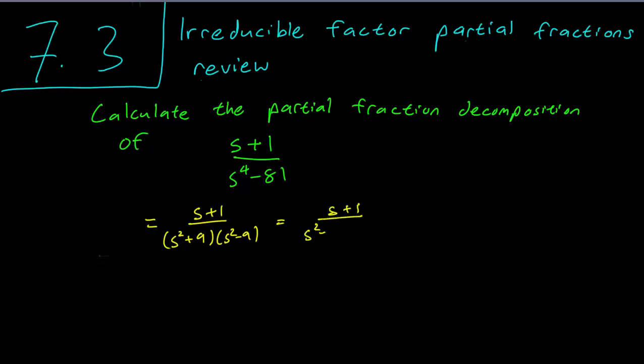So we have s plus 1, s squared plus 9, s plus 3, times s minus 3. And the s squared plus 9 term has no zeros, so it cannot be factored.